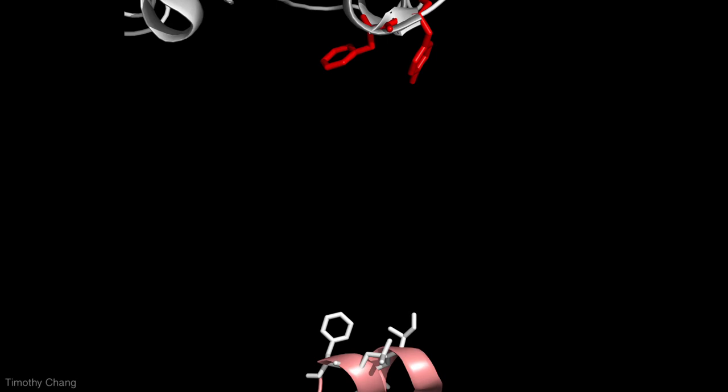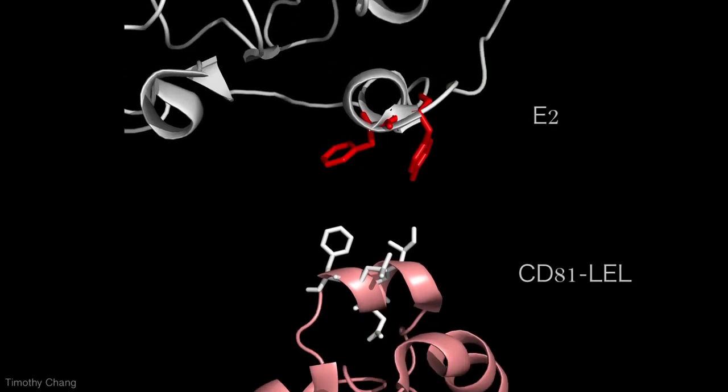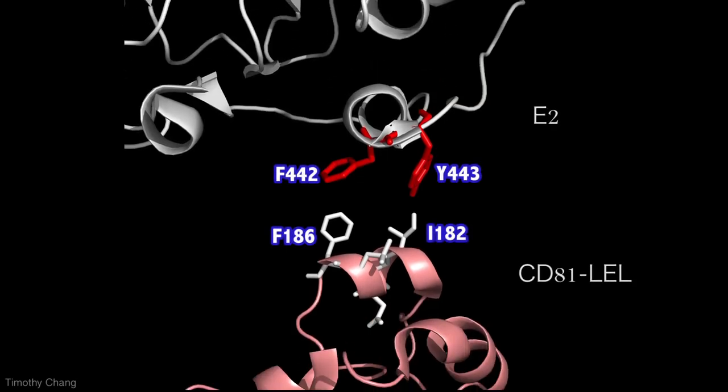Overall, the structural determination of the E2-CD81 interaction provides a new potential pathway for antibody research. With the understanding of this interaction, research on antibodies targeting these specific residues and motifs can begin.